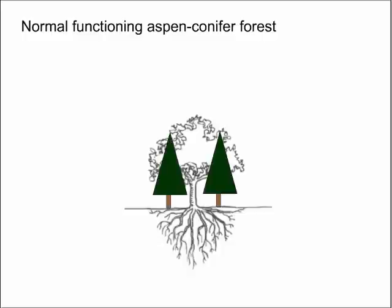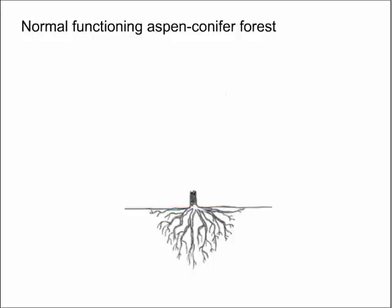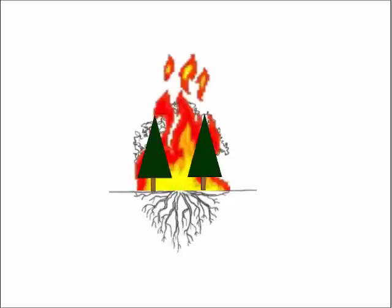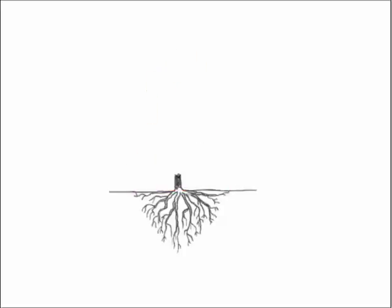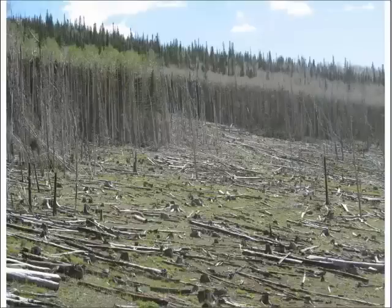In this conceptual model: Aspen establishes following disturbance, it facilitates the conifers, at some point fire creates a disturbance, and the Aspen restart the cycle by regenerating. What's problematic is that one of the defense strategies for Aspen is to escape herbivory through vertical growth, and following a disturbance, Aspen is very vulnerable to herbivory. Historically, livestock weren't on our forest landscapes and wildlife densities were much lower, so that's created a challenge in some areas.